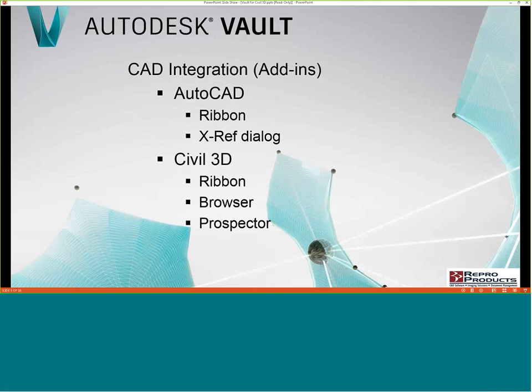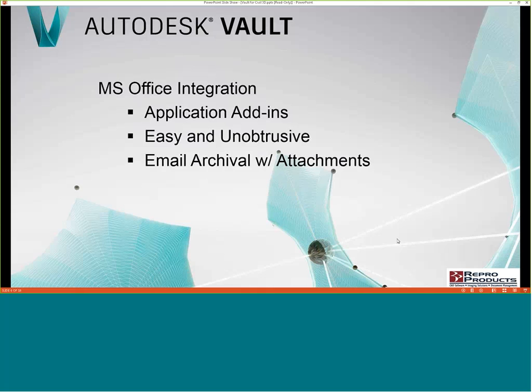We have CAD integration with Vault. With AutoCAD you get ribbon and xref dialog controls you can use. Inside Civil 3D you have the ribbon, the xref dialog box, and the Prospector as well — data references show up in Prospector. Vault integrates with Office, so you can track Word documents with a ribbon tab in Word, Excel, PowerPoint, and even Outlook. When you track an email, it saves the attachments with it and keeps them all linked together.